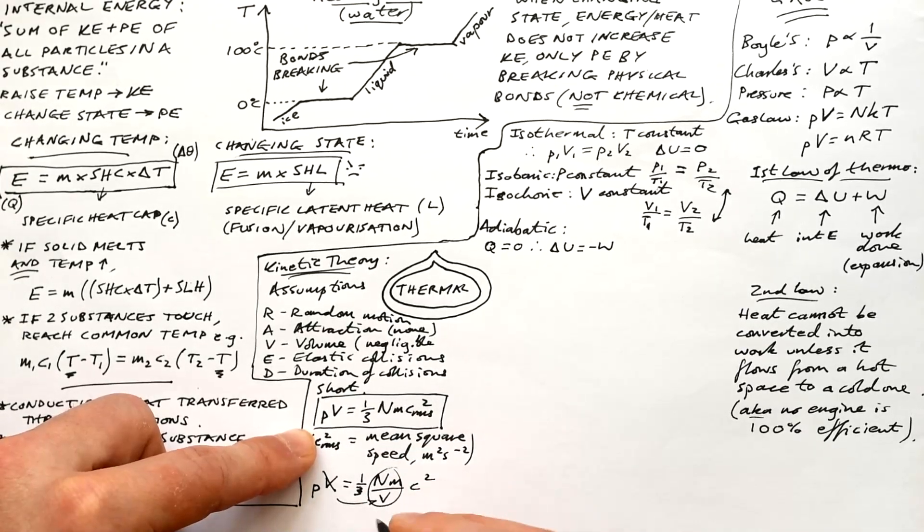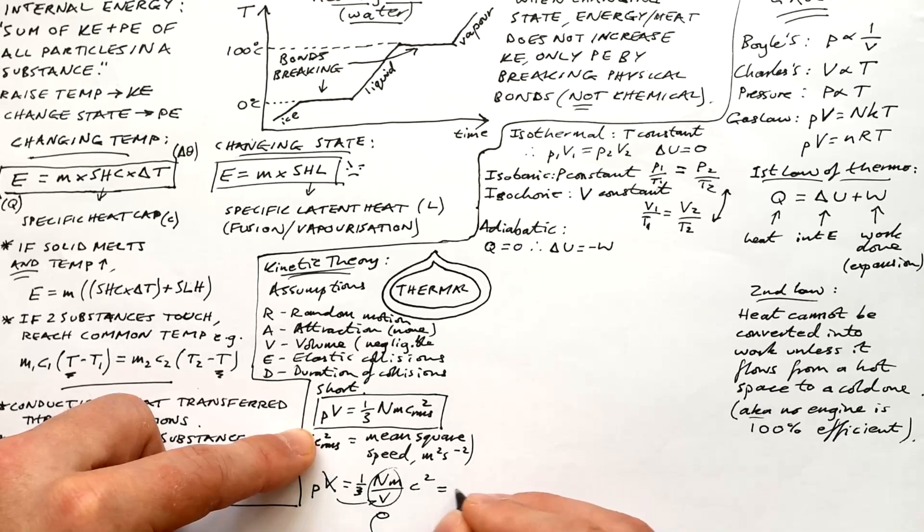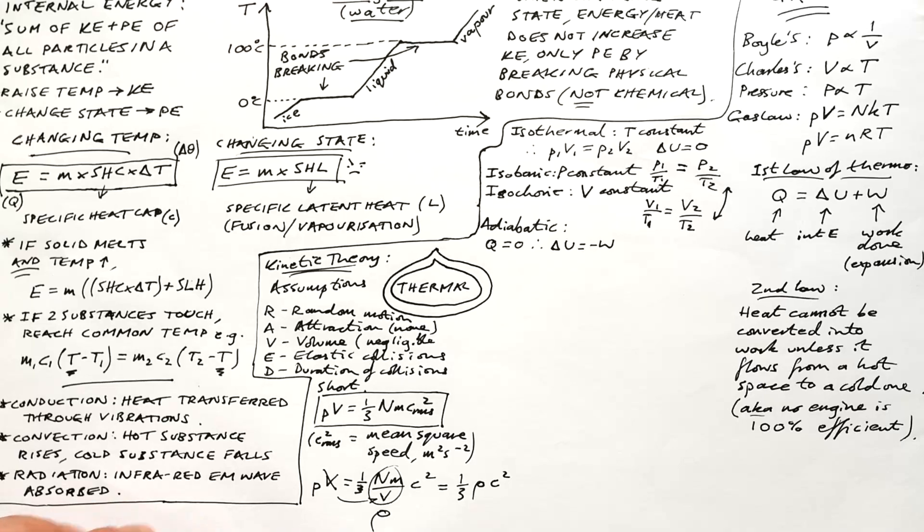We can use density in the equation. If we divide the whole thing by volume, we end up with NM over V. That is total mass over volume. That's density. So P equals third rho C squared.